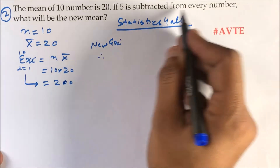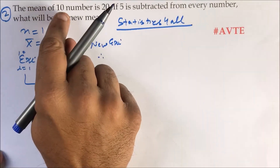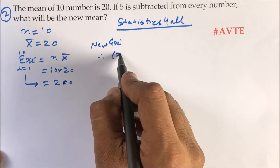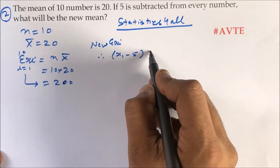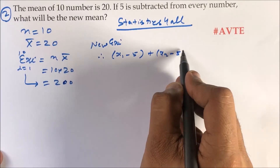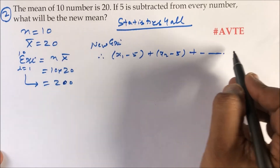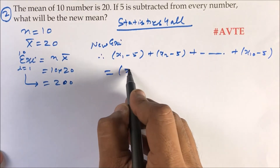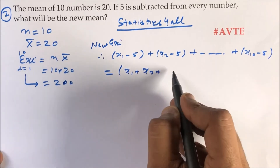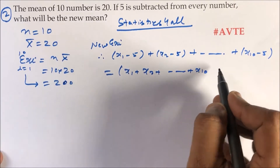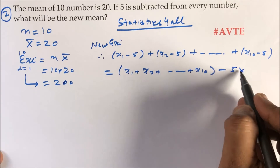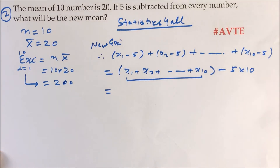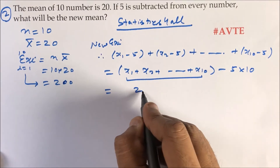The condition is that 5 is subtracted from every number — from all 10 numbers. We don't know the numbers, so the new observations are x1 minus 5, x2 minus 5, and so on up to x10 minus 5. Opening the bracket, we get sigma xi minus 5 subtracted 10 times. The sum of sigma xi is 200.